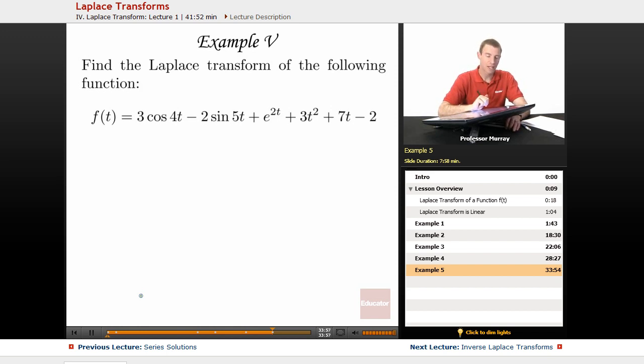Final example, we have a very complicated function: f of t is 3 cosine 4t minus 2 sine 5t plus e to the 2t plus 3t squared plus 7t minus 2, and we want to find the Laplace transform for that.